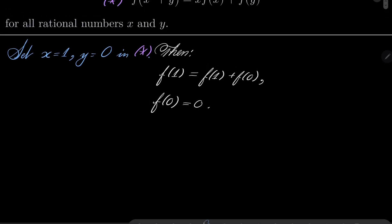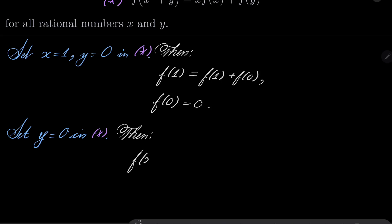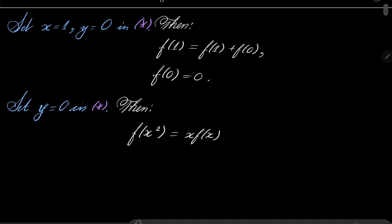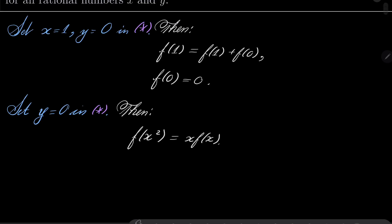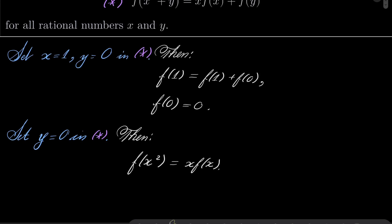Now let's set just y to be 0 in our equation asterisk. Notice that then we have f of x squared equals x times f of x plus f of 0, but as we know, f of 0 is 0. We'll use this later — let's call this condition "primal".